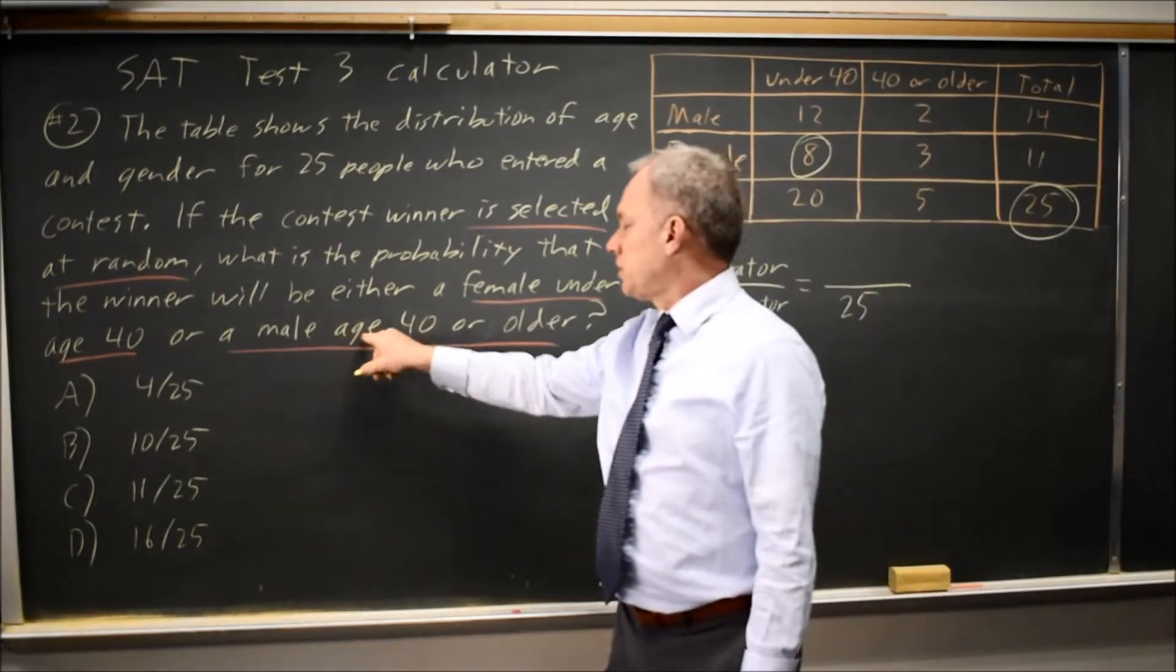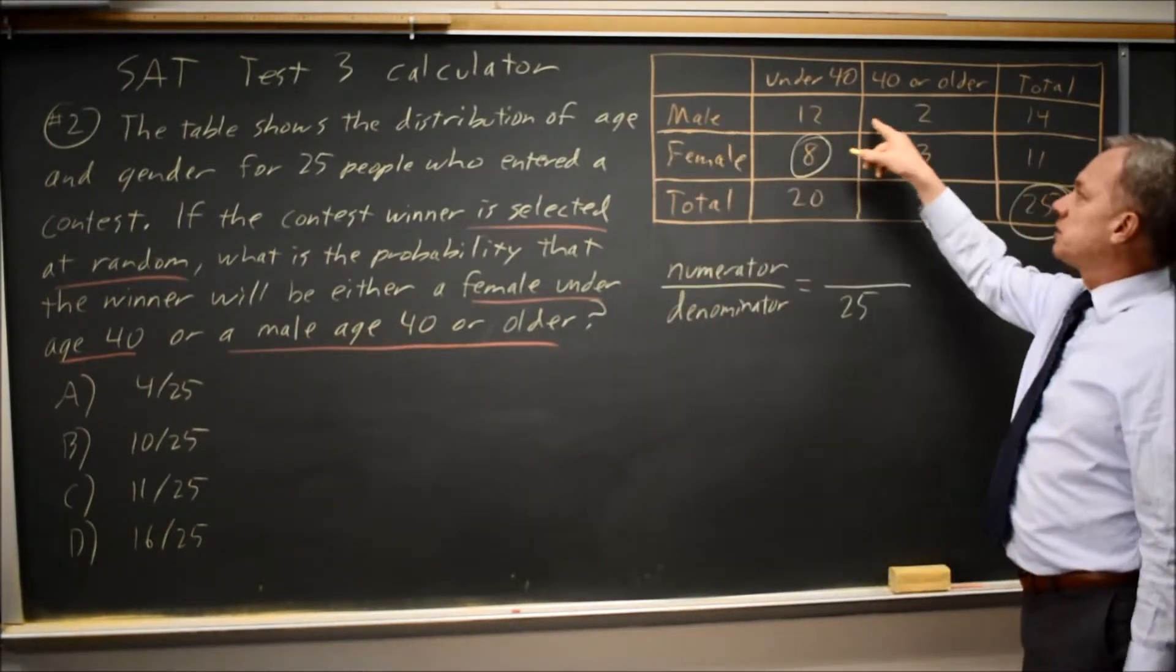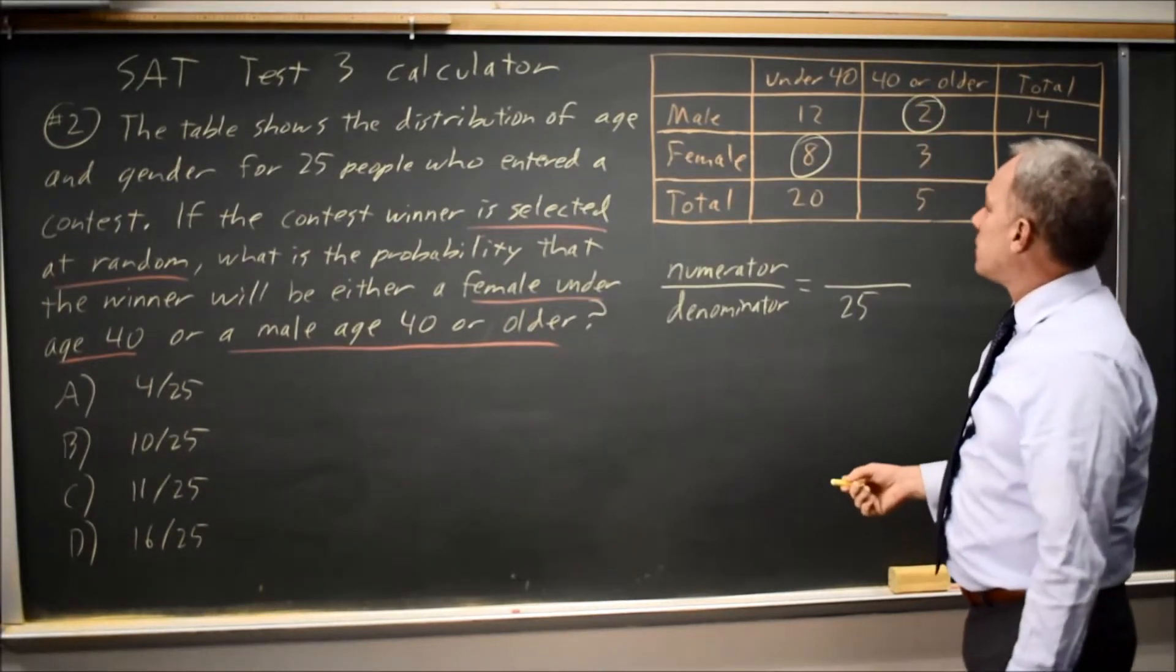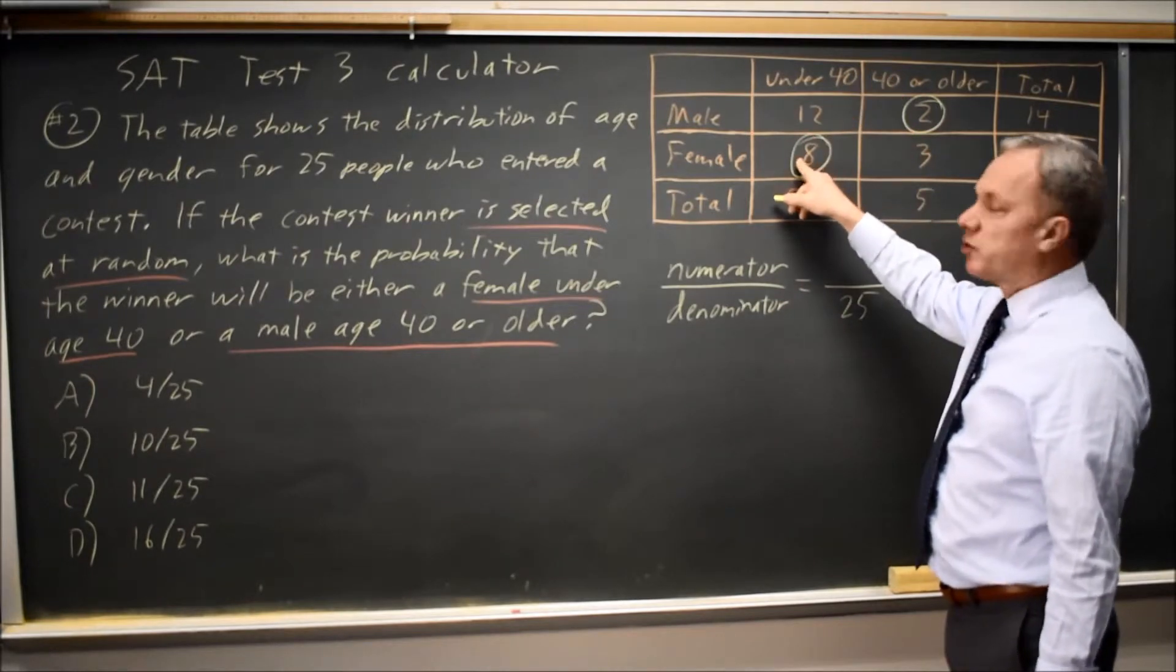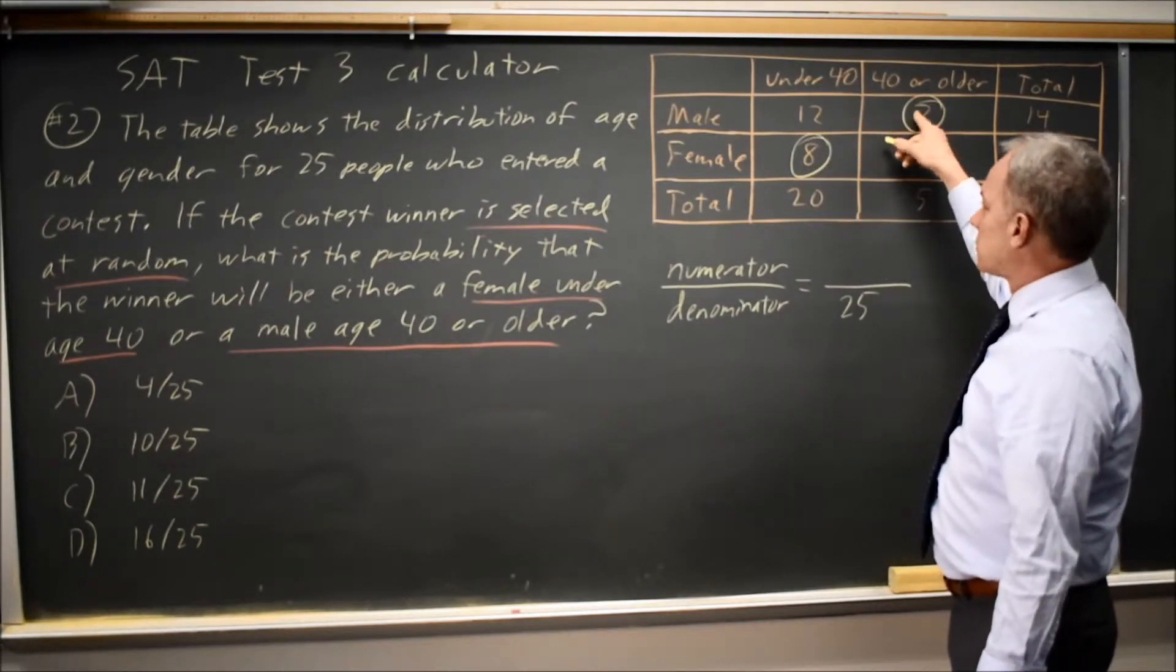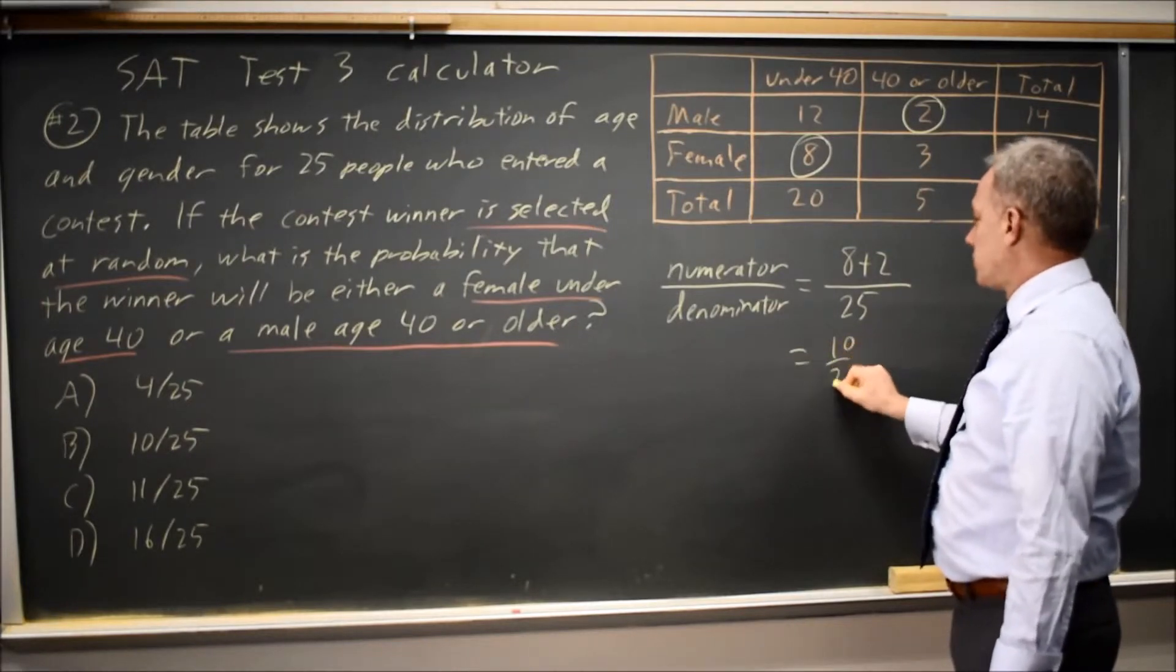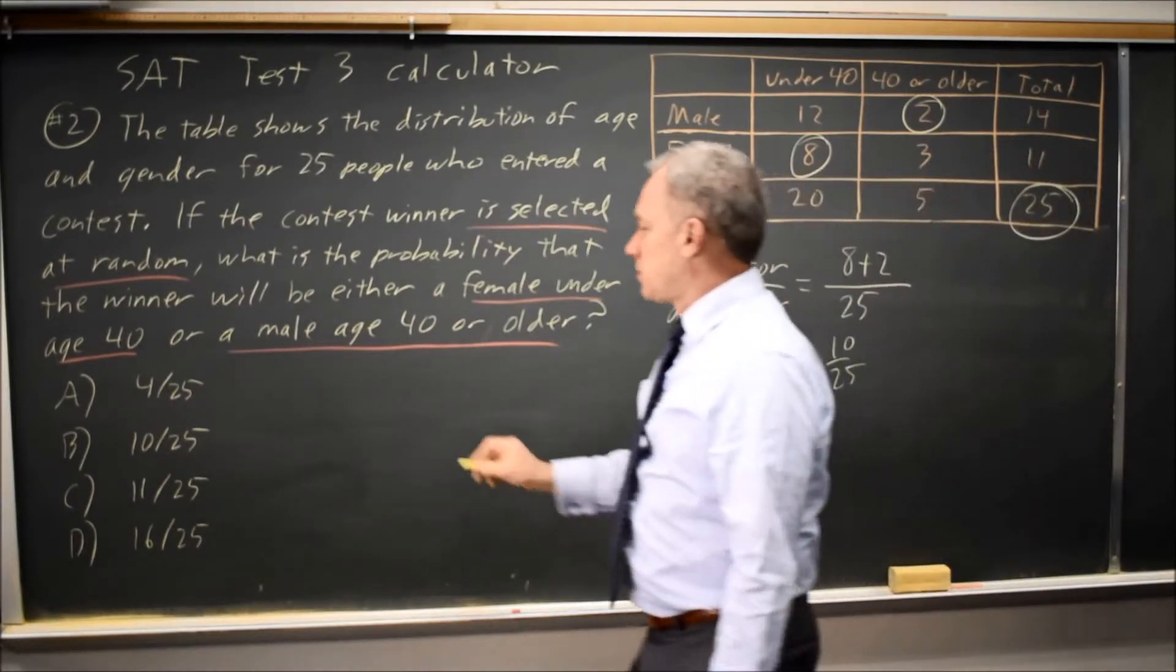Or a male age 40 or older. Male would be this row, but we only want 40 or older, which is these two. So our numerator, the individuals who are either female under age 40 or male 40 or older, is eight plus two, so that gives me 10 over 25, which is answer choice B.